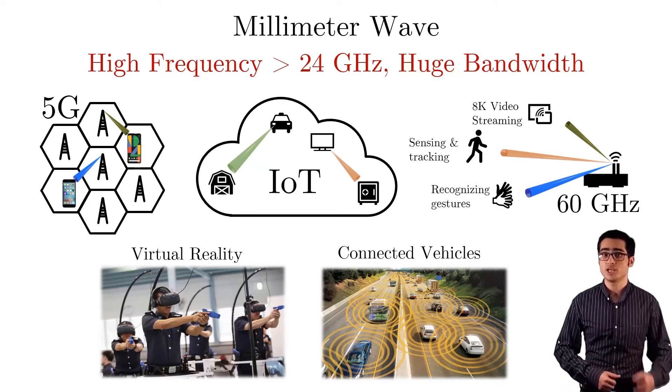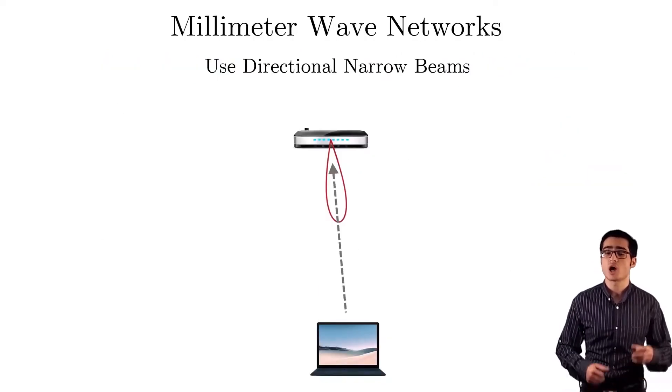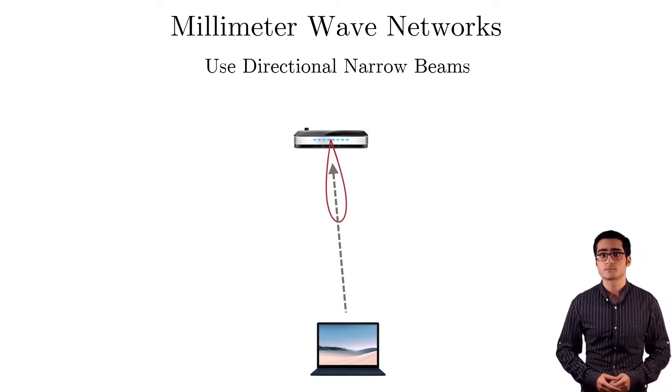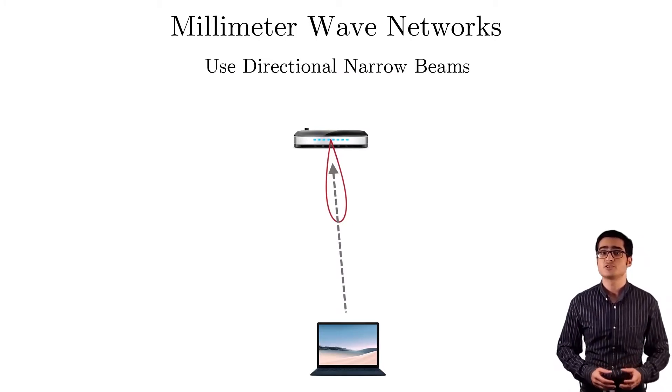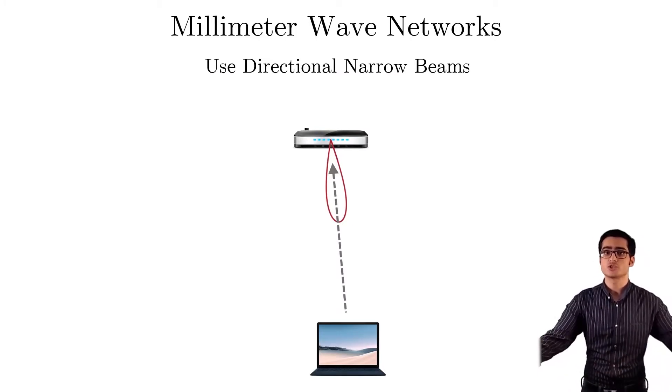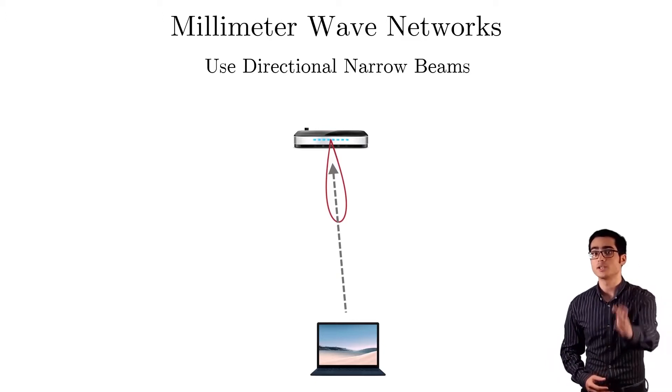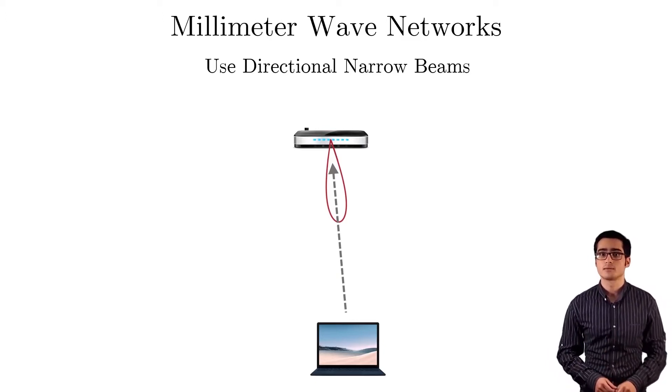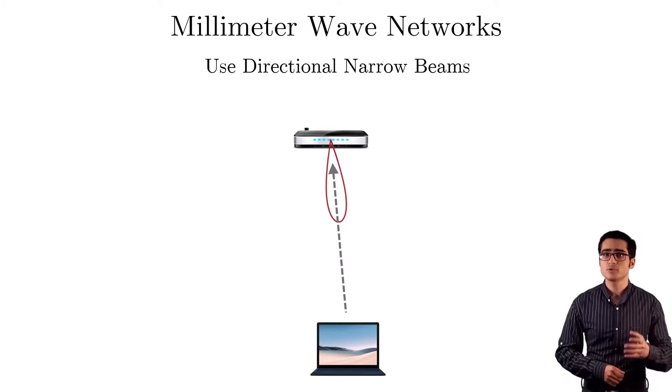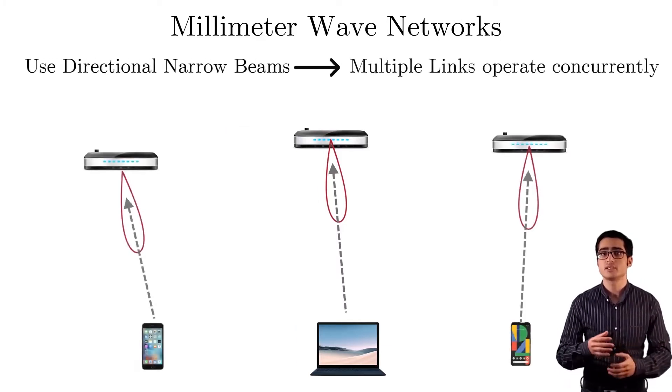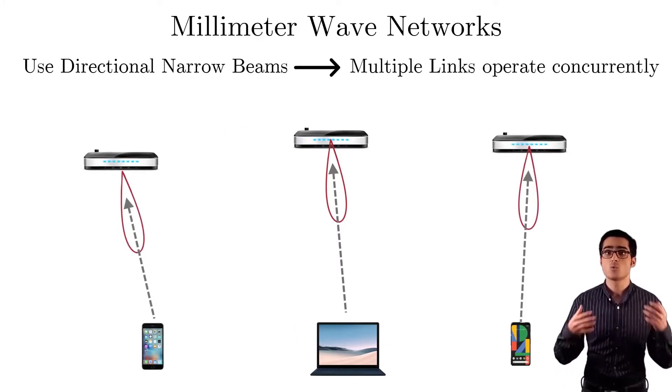mmWave, however, is different from today's wireless networks in that it uses highly directional narrow beams. This means that instead of going out in all directions, the signal is focused along one direction, and we can have multiple transmitter and receivers communicate with each other at the same time without interfering.